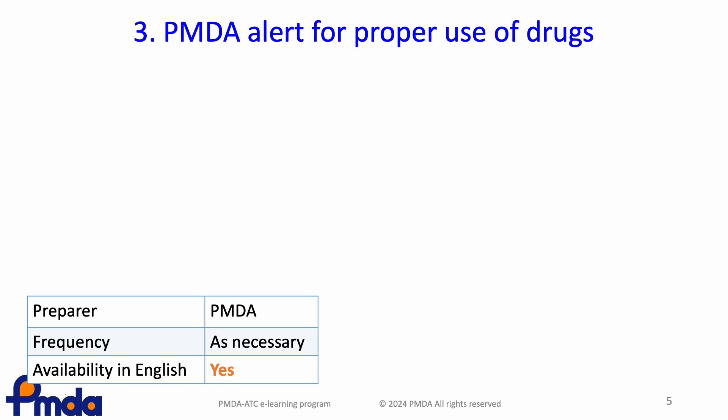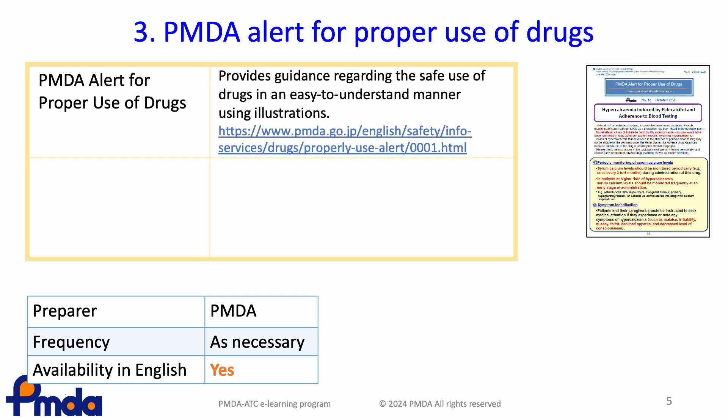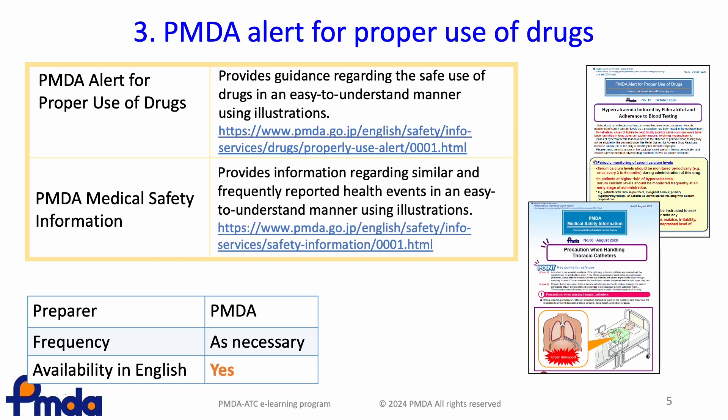Even though cautions are already provided through the use of labeling, some adverse events will repeatedly be reported to the PMDA. When the PMDA determines an additional alert is required in such a case, the PMDA will issue an alert for proper use of the drugs or medical safety information. These are written in a way that is easy to understand and also make use of illustrations.